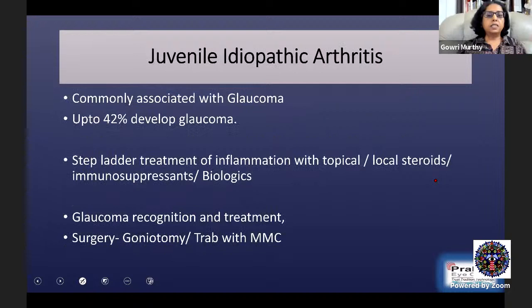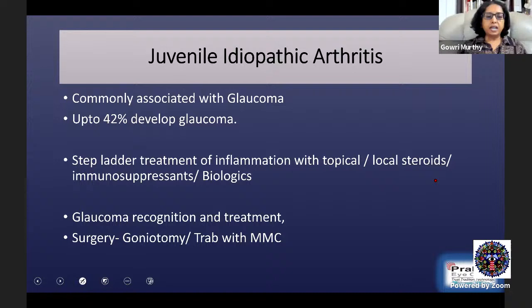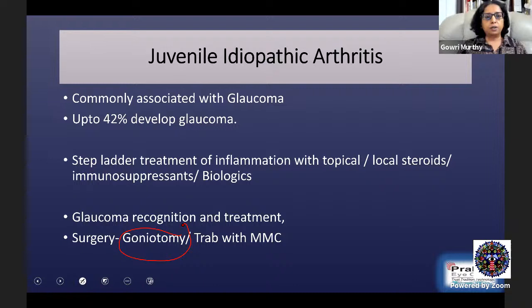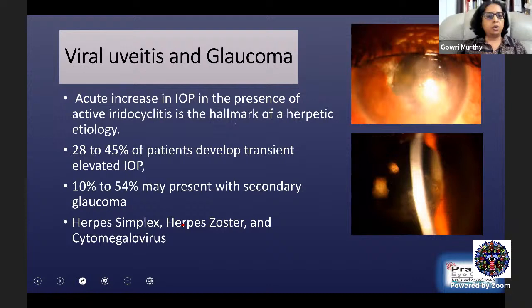Juvenile idiopathic arthritis is a less common cause of secondary glaucoma in our population. Up to 42% of patients with JIA go on to develop glaucoma. The inflammation must be treated in a stepladder fashion with topical or local steroids, immunosuppressants, and now biologics as well. Surgical management will be frequently needed, and this subset can respond even to goniotomy, which is a viable treatment option for this subset of uveitic glaucomas.